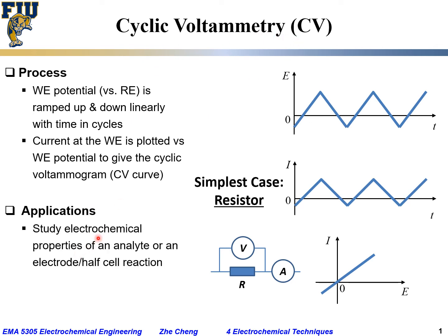The application for cyclic voltammetry (CV) measurements is to study an electrochemical electrode reaction, or half-cell reaction, or to study one of the active species — an analyte — involved in the electrochemical half-cell reaction.